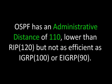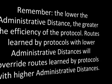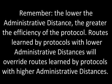OSPF has an administrative distance of 110, lower than RIP which is 120, but not as efficient as IGRP which is 100, or EIGRP which is 90. Remember, the lower the administrative distance, the greater the efficiency of the protocol. Routes learned by protocols with lower administrative distances will override routes learned by protocols with higher administrative distances.